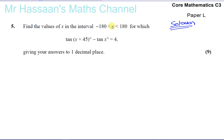One of my students has asked me to answer this question. It says: find the values of x in the interval where x is between minus 180 and 180 degrees, for which tan(x + 45°) minus tan(x) equals 4, giving your answers to one decimal place.